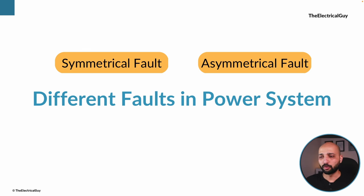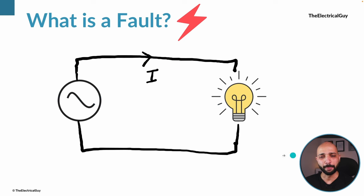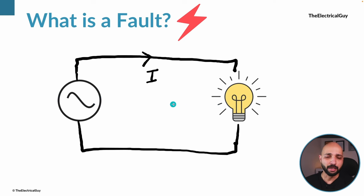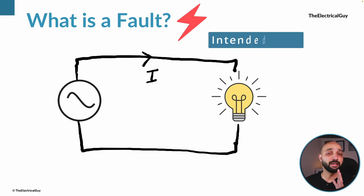First, let us understand what is a fault. Consider this simple example: we have an AC supply connected to a light bulb. The intended path for current I is from the source, then to the light bulb, and then back to the source. This is the intended path for the current.